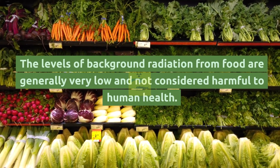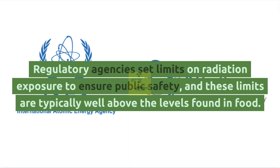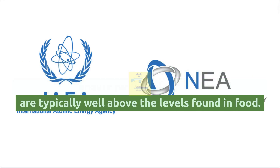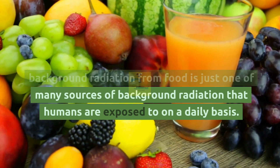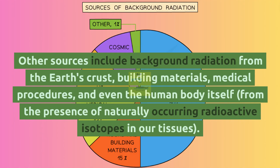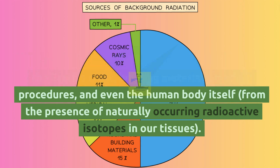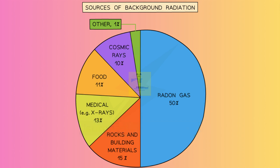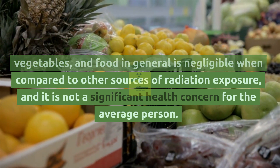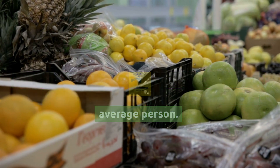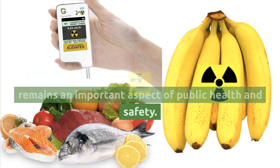The levels of background radiation from food are generally very low and not considered harmful to human health. Regulatory agencies set limits on radiation exposure to ensure public safety, and these limits are typically well above the levels found in food. Natural background radiation from food is just one of many sources of background radiation that humans are exposed to daily. Other sources include background radiation from the earth's crust, building materials, medical procedures, and even the human body itself from naturally occurring radioactive isotopes in our tissues. Overall, the radiation dose from consuming fruits, vegetables, and food in general is negligible compared to other sources, and monitoring and regulating radiation exposure, including in food, remains an important aspect of public health and safety.